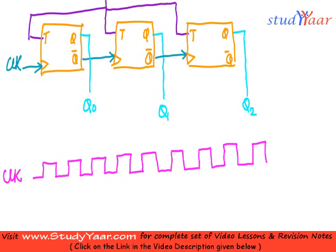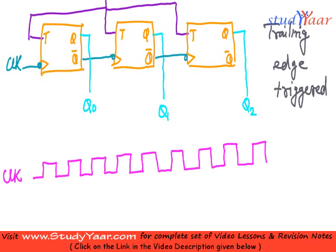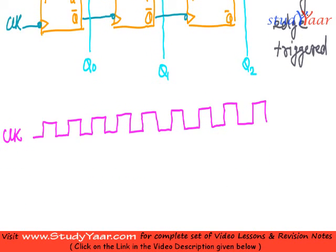But before that, let us understand that these are, in my case, trailing edge triggers, represented by a bubble. So this is trailing edge triggered flip-flop. So that you remember. You can have any form that you want. There is no restriction.